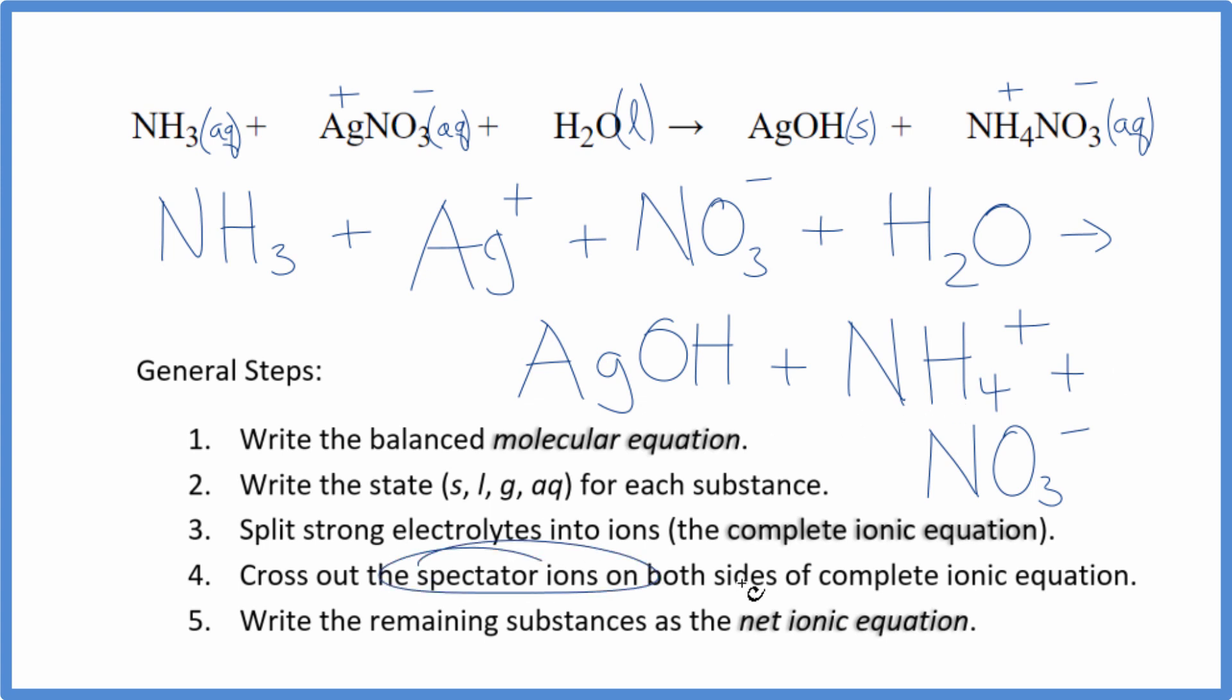Now we can cross out the spectator ions. They're on both sides of the complete ionic equation. So I have my reactants here, and then my products. I can see the nitrate. I have a nitrate ion here, and then again in the products. That's a spectator ion. We can cross that out. Everything else is different. So this is the net ionic equation.